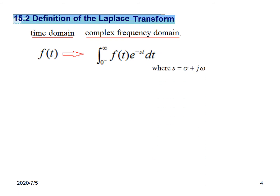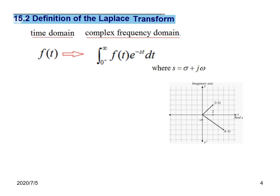Here S is the complex frequency, where the real part and the imaginary part are shown on a diagram with a real axis and imaginary axis. Any point on this plane is a complex frequency. For example, a point at 2 on the real axis and 2 on the imaginary axis is written as 2 plus 2j, and similarly a point at 4 on the real axis and minus 3 on the imaginary axis.